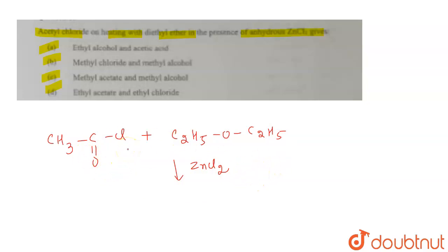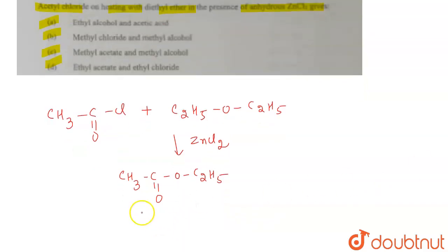The products formed are CH3-CO-O-C2H5. This is ethyl ethanoate, or we can say ethyl acetate.